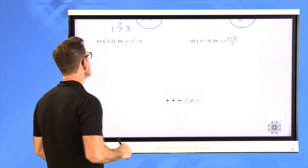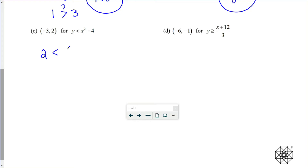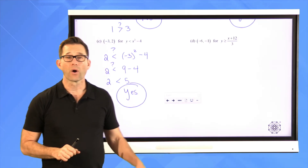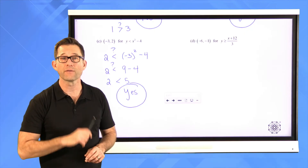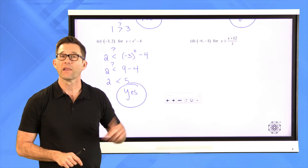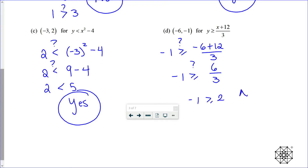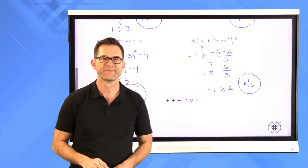Letter C has a little x squared in it. Putting 2 in for y: 2 is less than negative 3 squared minus 4. Negative 3 squared is positive 9, and 9 minus 4 is 5. Is 2 less than 5? Yes — so the point (negative 3, 2) lies on the graph of that inequality. Letter D involves a fraction: putting negative 1 in for y gives negative 1 greater than or equal to negative 6 plus 12 divided by 3, which simplifies to negative 1 greater than or equal to 2. That's false, so that point does not lie on the graph.